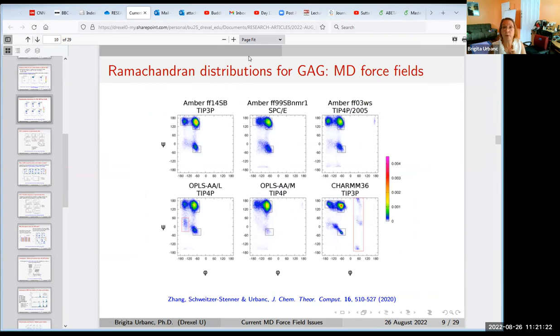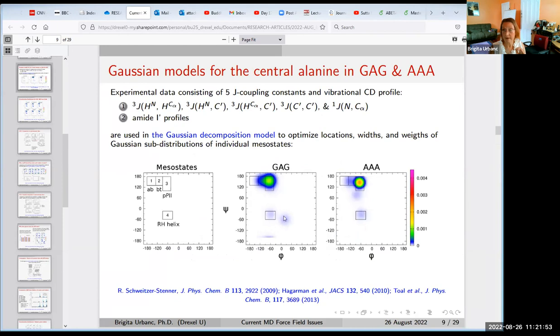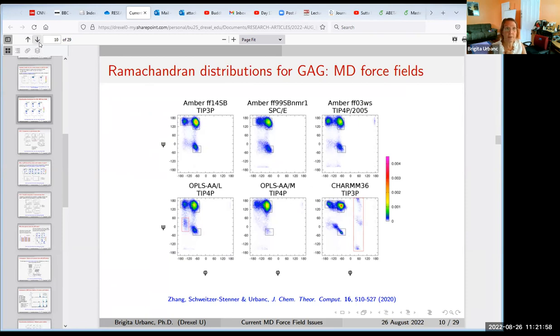This is what we've done first for Ramachandran distributions for alanine in GAG. We've taken a series of force field water model combinations that you can see them here. There's a mistake on this slide—this is CHARM, this is the latest version of CHARM. Now, if you compare these Ramachandran distributions that come from MD simulations with different force fields, you will see they're very different from this one. This is the Gaussian model. Let's see how well they reproduce experimental data.